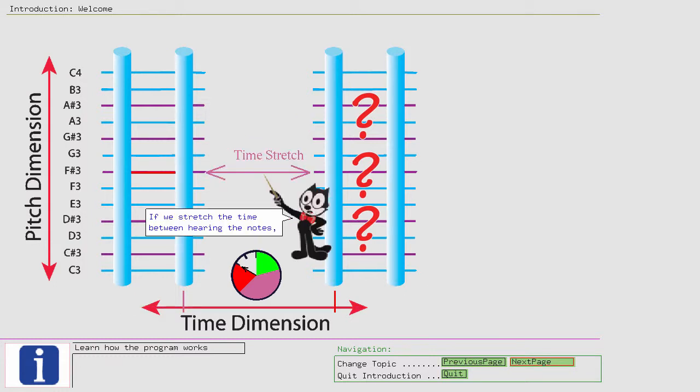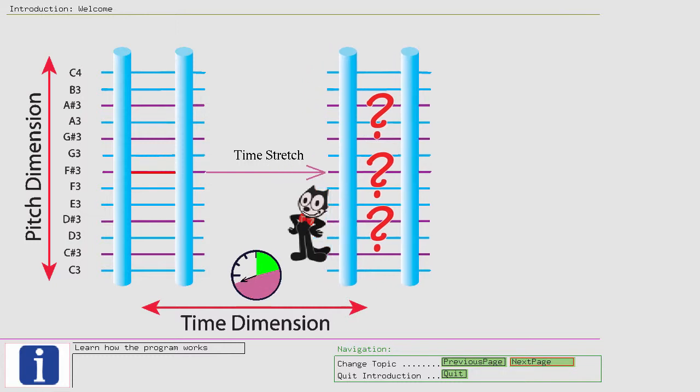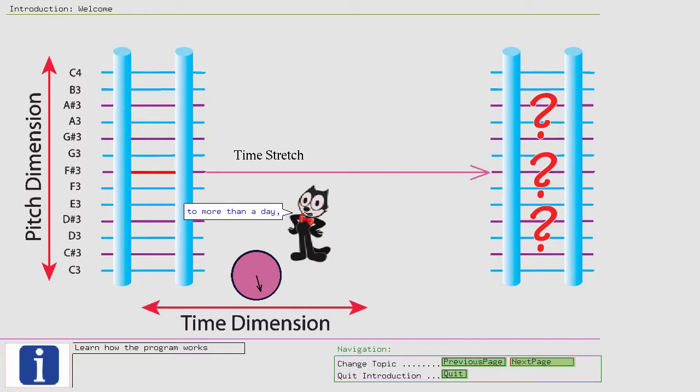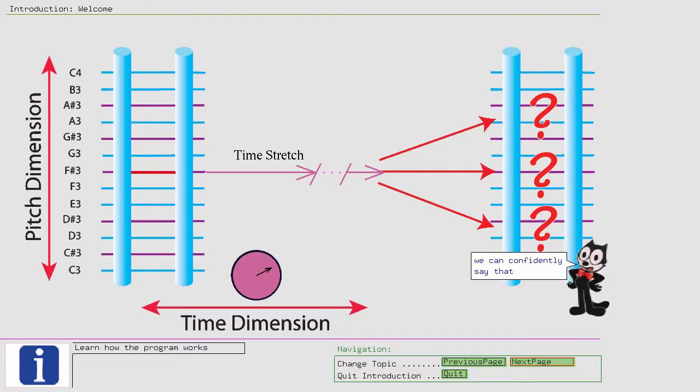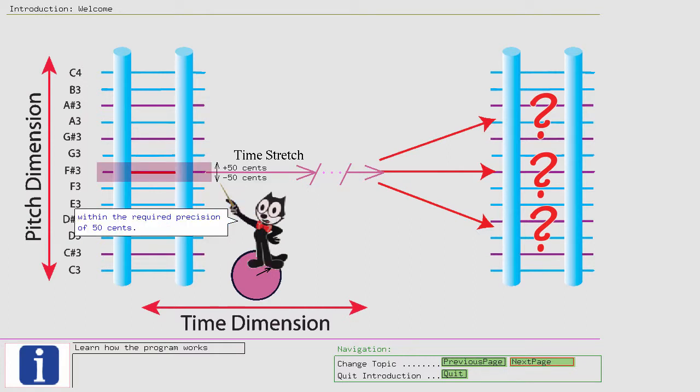If we stretch the time between hearing the notes to more than a day, then if we still can accurately answer the pitch dimension for half steps, we can confidently say that we have absolute pitch. This is because we are able to identify a pitch without having to listen to a reference sound again, when we remember the sound from a day ago within the required precision of 50 cents.